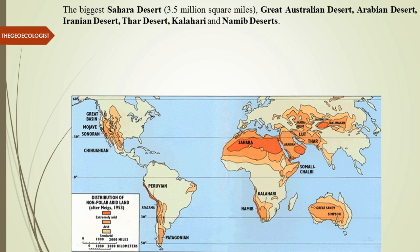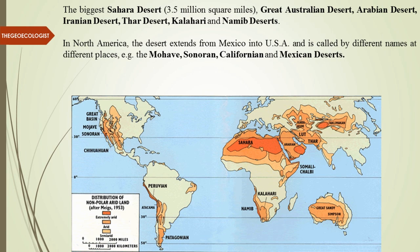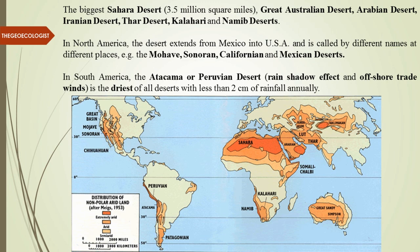The biggest desert is the Sahara at 3.5 million square miles. Others include the Great Australian Desert, Arabian Desert, Iranian Desert, Thar Desert in India, and Kalahari and Namib Deserts. In North America, deserts extend from Mexico into the United States with names like Mojave, Sonoran, Californian, and Mexican.